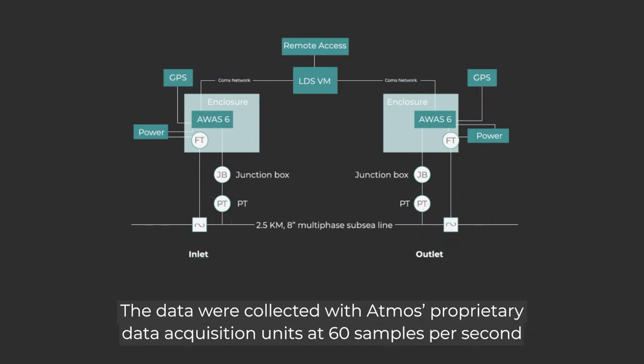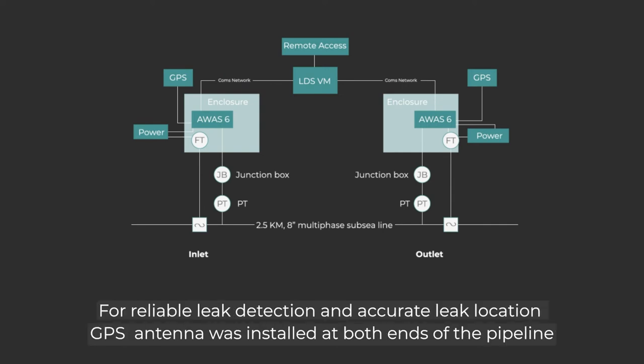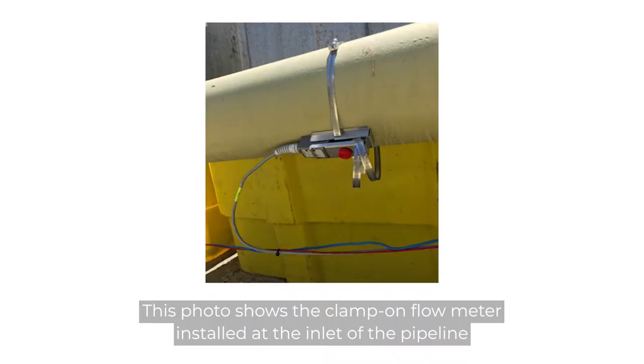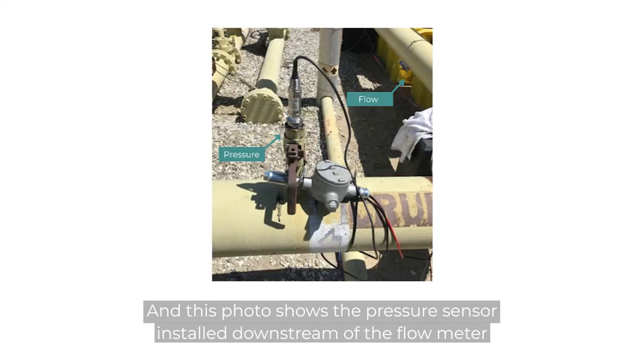The data were collected with Atmos proprietary data acquisition units at 60 samples per second. For reliable leak detection and accurate leak location, GPS antennas were installed at both ends. This figure shows the instrumentation system setup for this application. This photo shows the clamp-on flow meter installed at the inlet, and this photo shows the pressure sensor installed downstream of the flow meter.